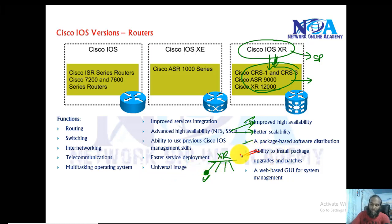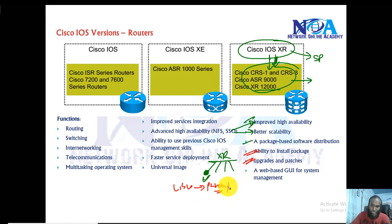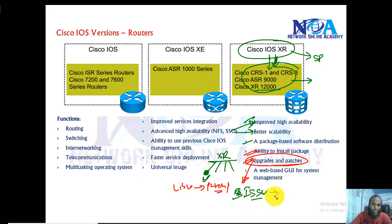IOS XR also supports software upgrades and patches. Similar to Windows OS patches that fix bugs, you can apply upgrades and patches to the existing operating system while the router is still running. This feature is called in-service software upgrade, or ISSU, which allows patching without rebooting while the router continues forwarding traffic.